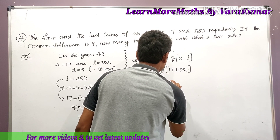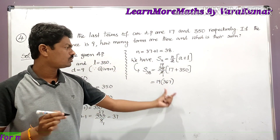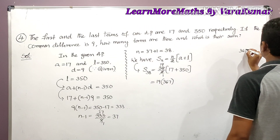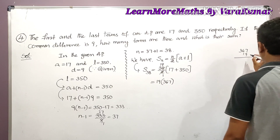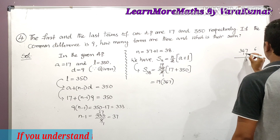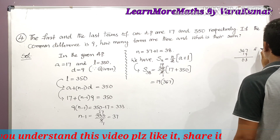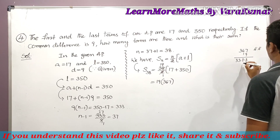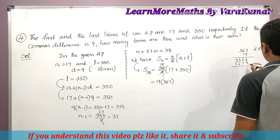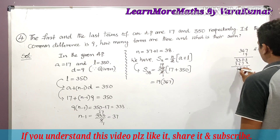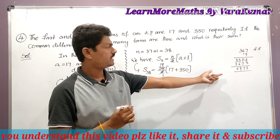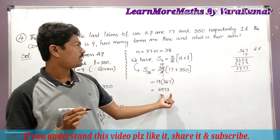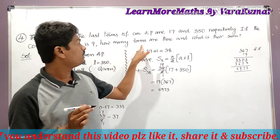Now multiplying 367 × 19: 9×7 = 63, 9×6 = 54 + 6 = 60, 9×3 = 27 + 6 = 33, giving 3303; then 1×367 = 3670. Adding: 3303 + 3670 = 6973. So the sum is 6973.